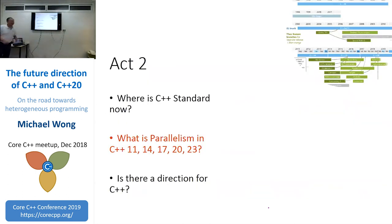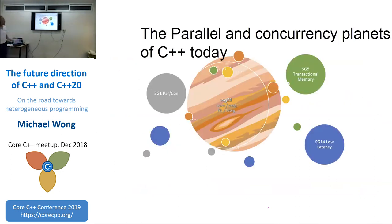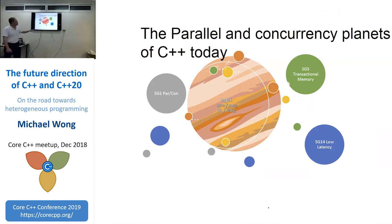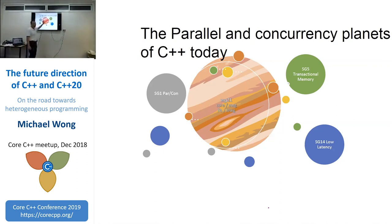I'm finally getting into act two. Right now, to support parallelism and concurrency, we have the essential standard groups — core working group, library, and evolution groups — and also SG1 which handles parallelism and concurrency, SG5 for transactional memory, and SG14 for low latency.